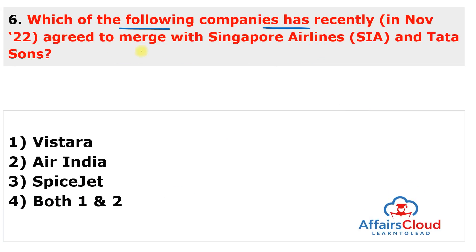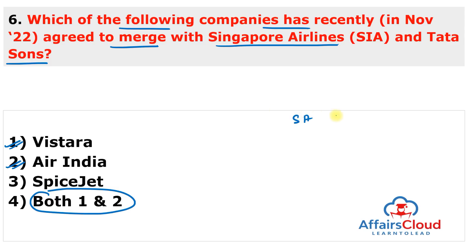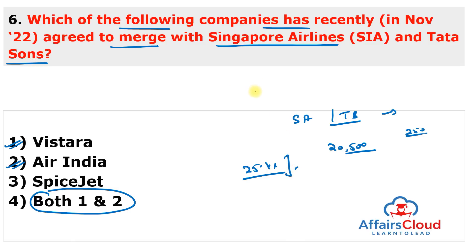Question 6: Which companies agreed to merge Vistara and Air India? The answer is both Singapore Airlines and Tata Sons. Singapore Airlines agreed to merge Vistara with Air India and is investing approximately ₹20,500 million (250 million dollars) in Air India. As a result, Singapore Airlines will hold a 25.1% share in the enlarged Air India group. The merger is targeted for completion by March 2024. Air India also received its first Boeing 777-200 long-range aircraft named 'VEHAN' (Dawn of a New Era), with registration VT-AEF.